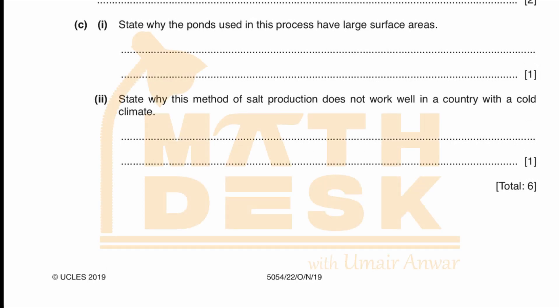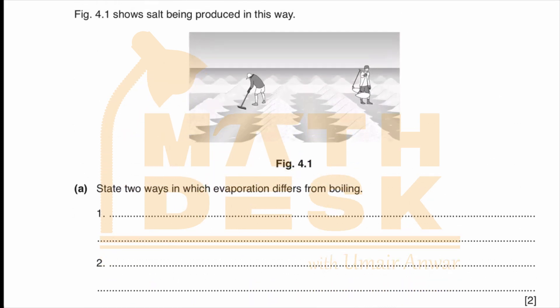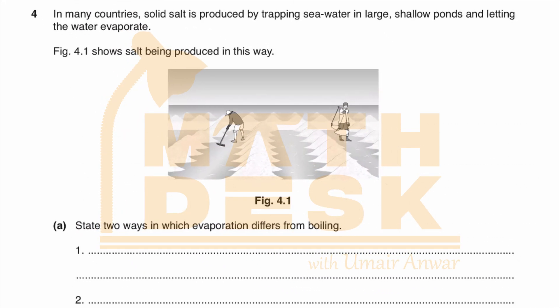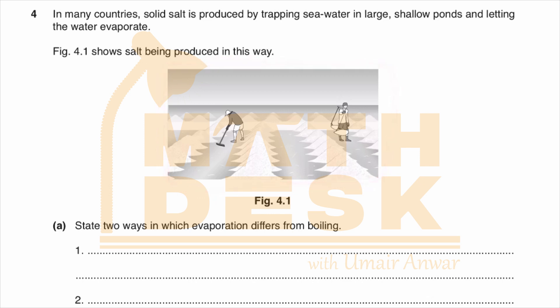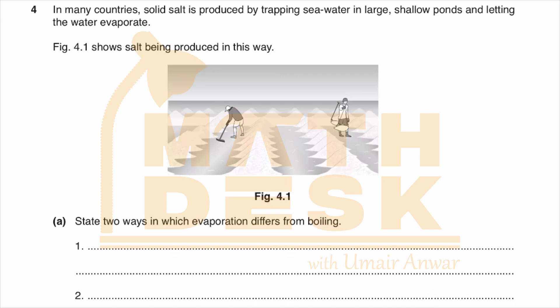Welcome to this tutorial. I am solving question number four of paper 2, October/November exam series of 2019, GCSE O-level physics. The question is mainly related to boiling and evaporation. It says in many countries solid salt is produced by trapping sea water in large shallow ponds and letting the water evaporate. Figure 4.1 shows salt being produced in this way.